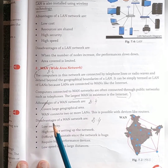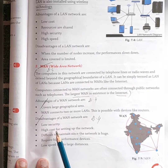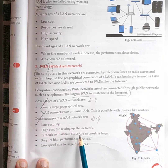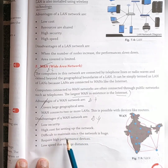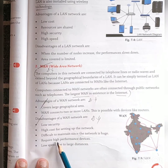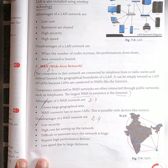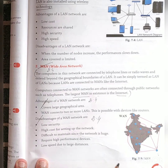Disadvantages of WAN: low security — there is a big problem with security level. High cost for setting up a network. Difficult to maintain — if any problem occurs, it is very difficult to maintain since the network is very huge. Requires high-performance devices. Low speed due to large distance.